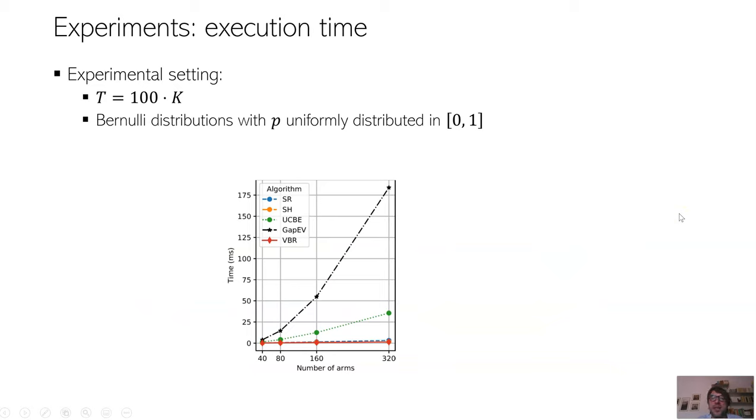We also measured the execution time when the number of arms increases, and the budget linearly depends on the number of arms. This figure is about Bernoulli distributions, but with other distributions, the results are very similar. And as you can see, GAPEV and UCB, that are the algorithms based on the notion of the upper confidence bound, are very slow. Whereas the rejection algorithms and VBR rapidly find the best arms, so are more appropriate for real-time applications.